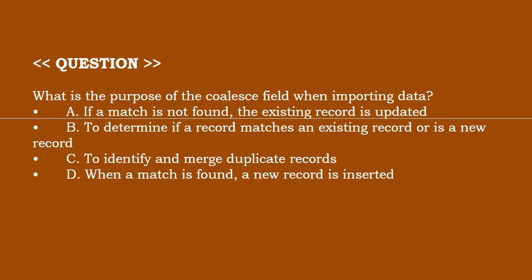What is the purpose of the coalesce field when importing data? Option A: If a match is not found, the existing record is updated. Option B: To determine if a record matches an existing record or it is a new record.